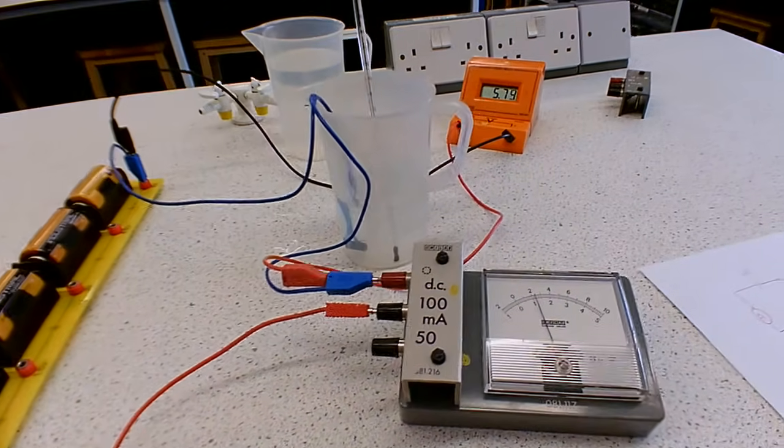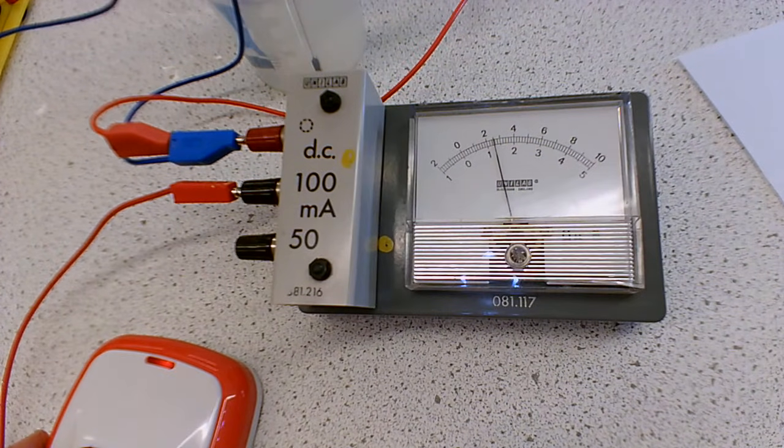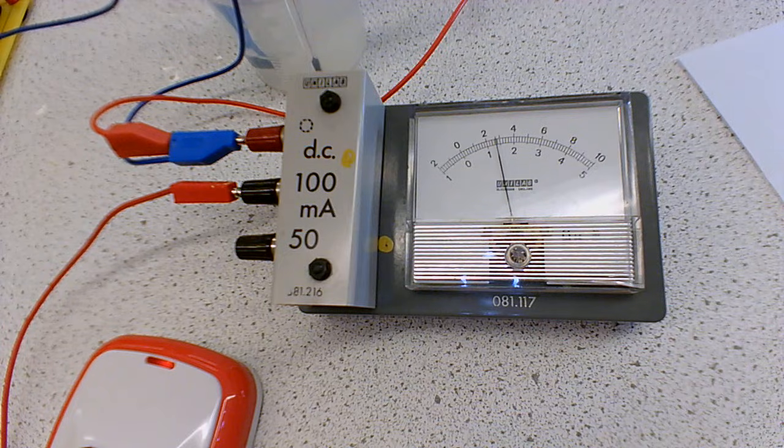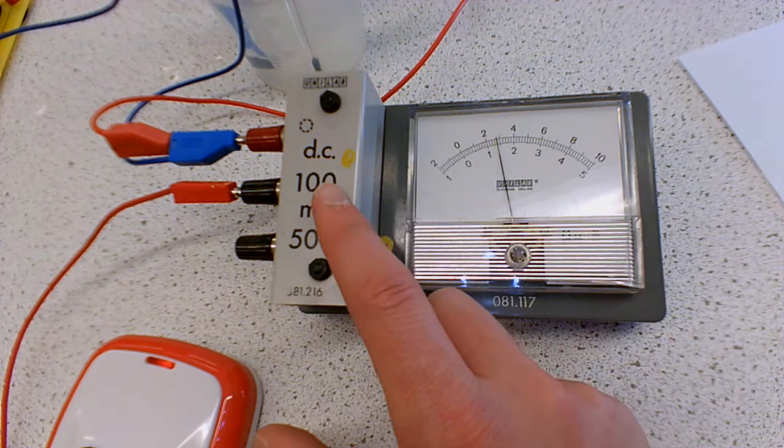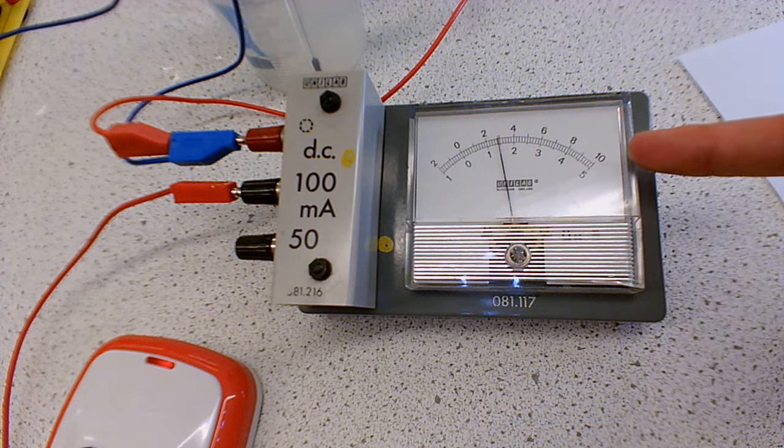And what we'll see is the current is going to start to creep up. So you can see the current has gone up above what it was before. We are plugged into the 100 milliamps setting, so we're going to be reading on the scale that goes up to 10.